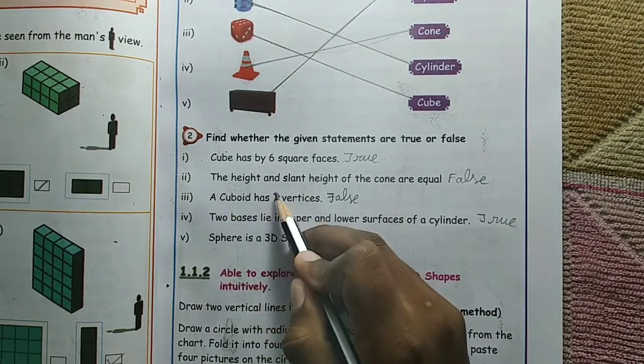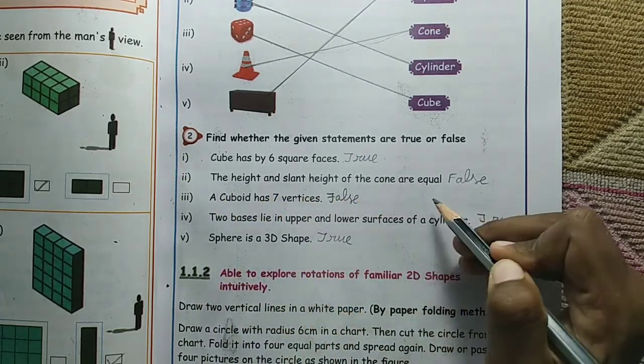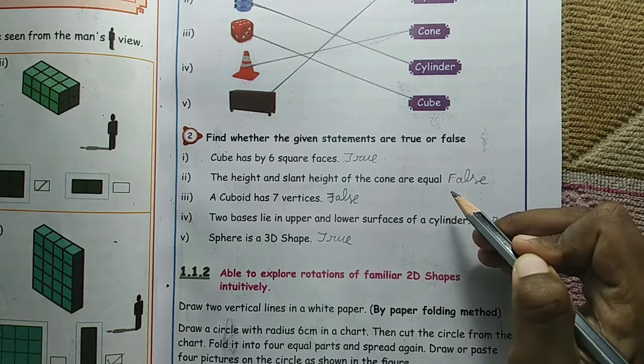The height and slant height of the cone are equal. No, it is false.